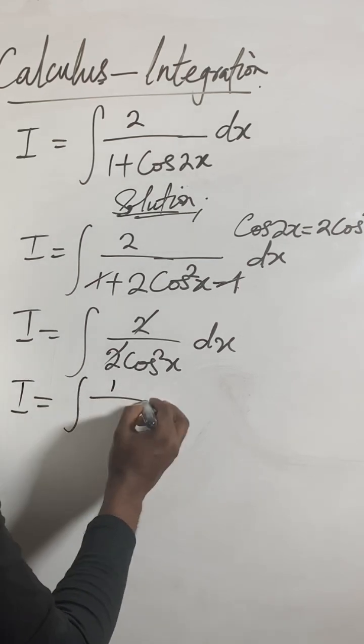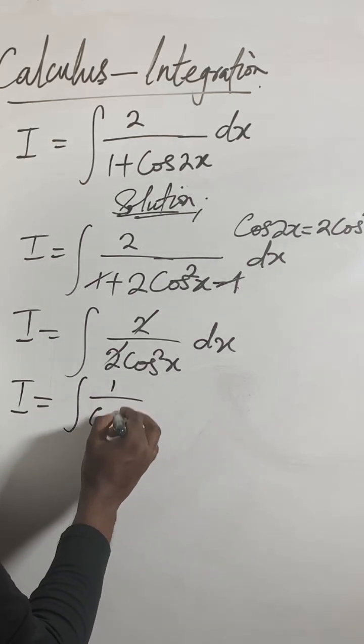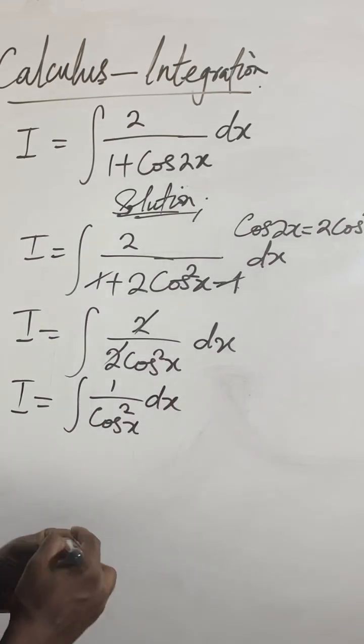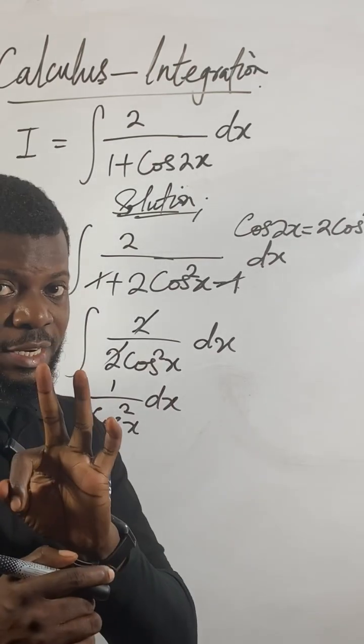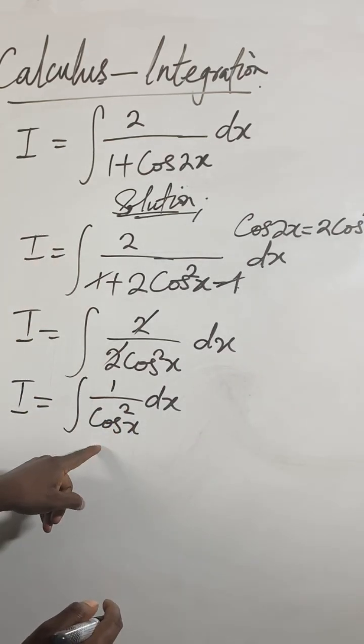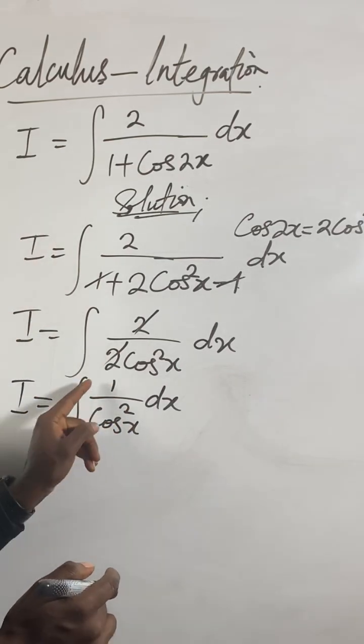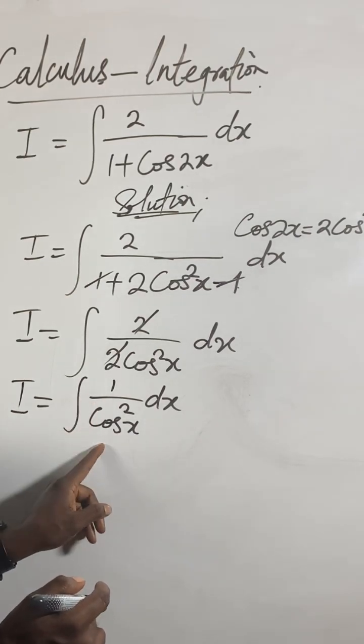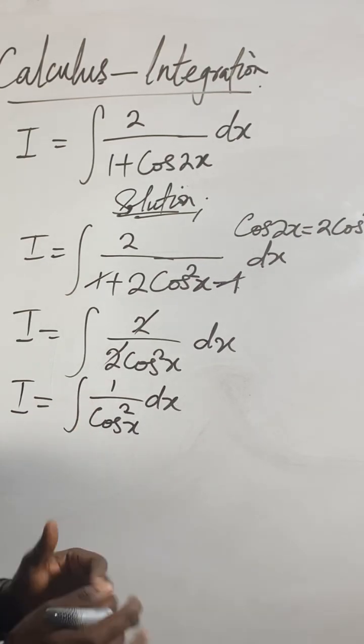I'll get integral of 1 over cos²x with respect to x. But then I still haven't integrated yet. The next thing I will ask myself: have I seen this thing for trigonometry? Now, 1 over cos, inverse of cos is sec. 1 over cos is sec.